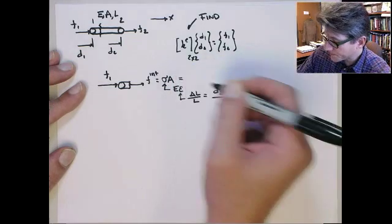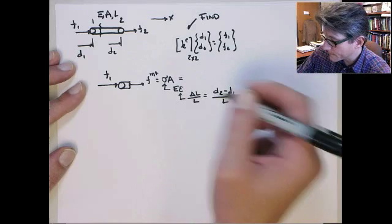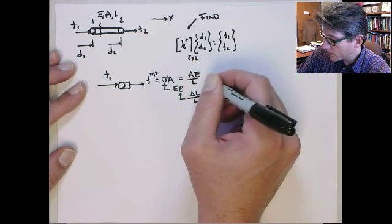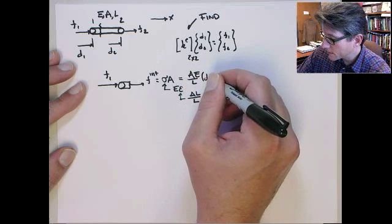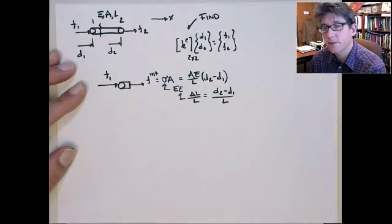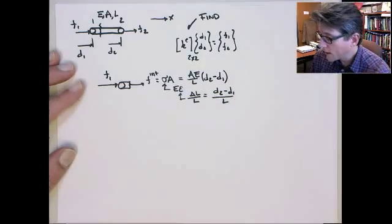So all this gives us EA on L times D2 minus D1. That's the internal force when I just substitute all this stuff back in for sigma.